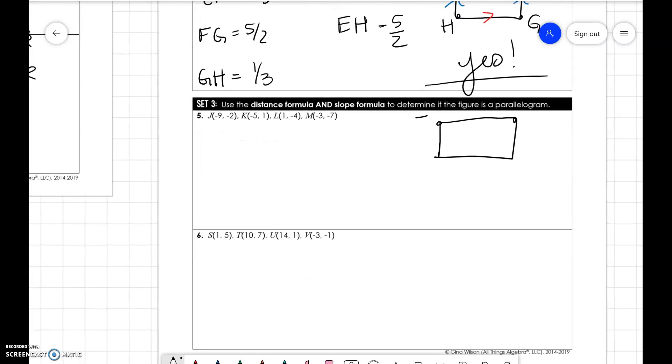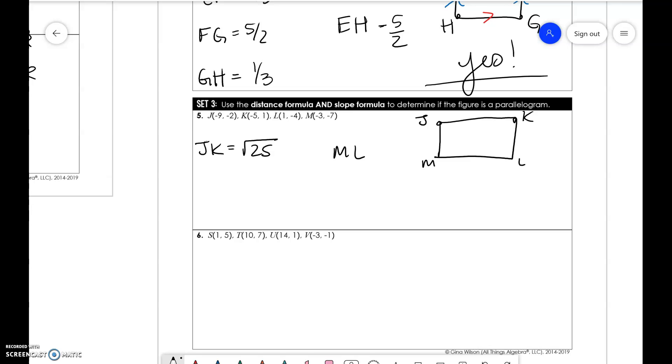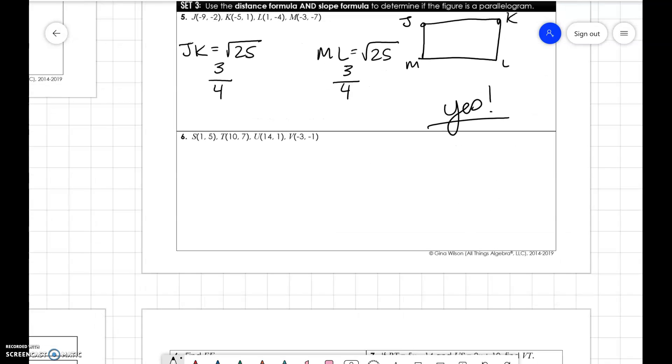If we remember for this one, J, K, L, M, you just need to do the distance and slope of one set of sides. Let's do JK and ML. If you find the distance of JK, you're going to get the square root of 25, and the distance of ML will also be the square root of 25. If you do the slope of each one, you're going to get 3 over 4 and 3 over 4. This is yes because they are congruent and the same slope.